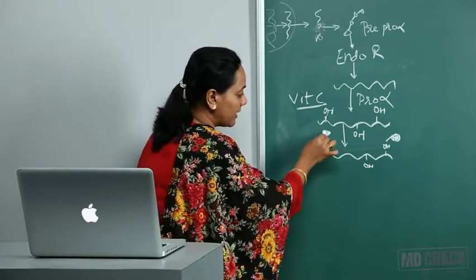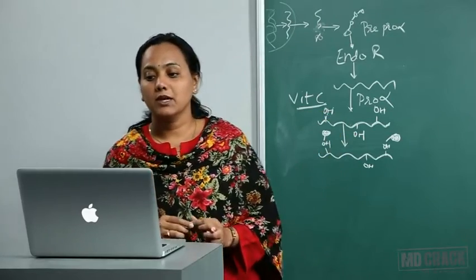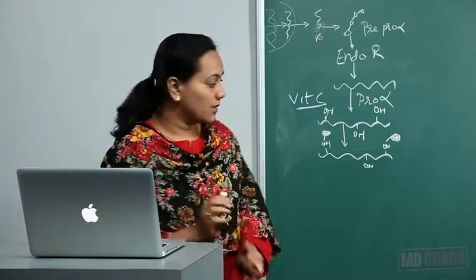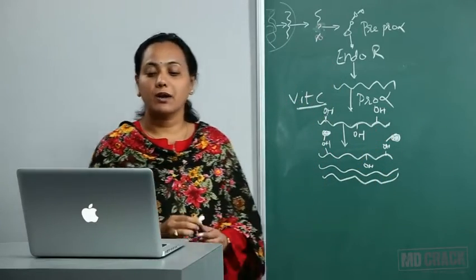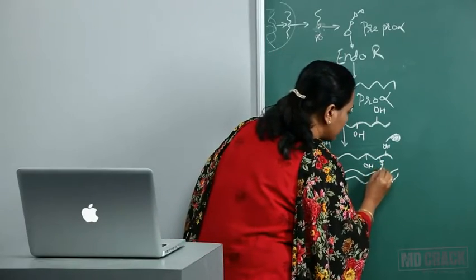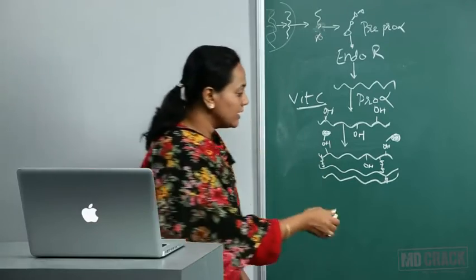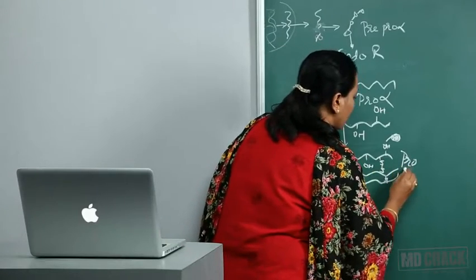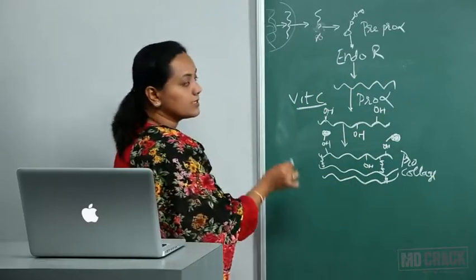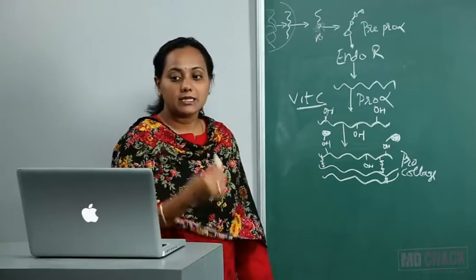The pro-alpha chain, which has been hydroxylated and glycosylated, now needs to be assembled. Many such pro-alpha chains come together, and disulfide bridges are formed between them. The disulfide bridges help the chains come together. This assembled structure is called pro-collagen. This entire process takes place in the endoplasmic reticulum.